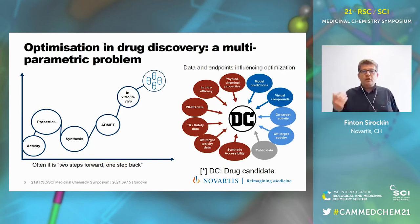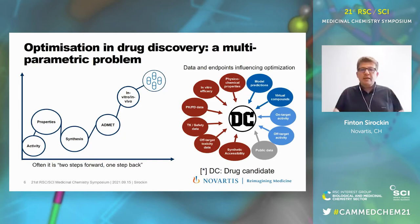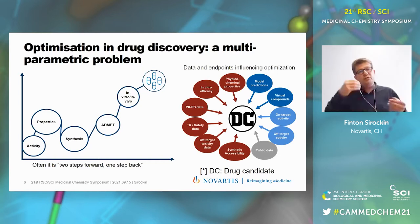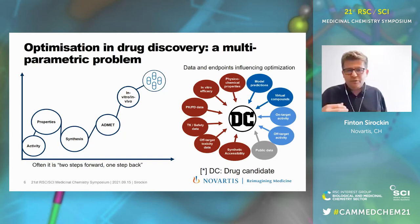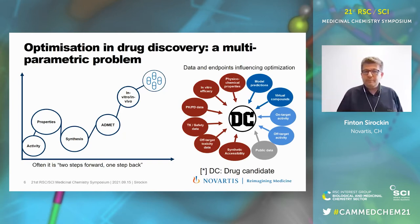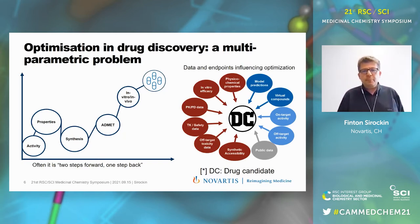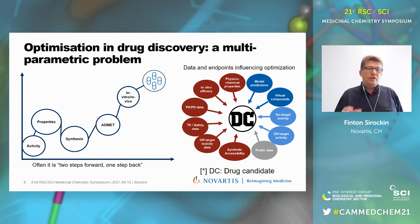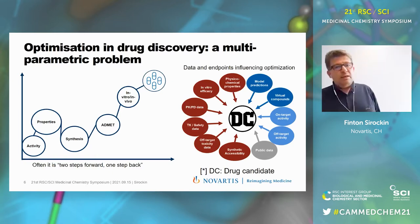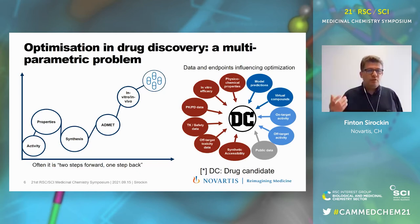A good drug candidate must bind the target efficiently, have good affinity for the target, but must also avoid anti-targets. It must have decent synthesis accessibility and good physicochemical properties to have a chance at a good ADME profile, and then hopefully a good in-vivo profile. We can usually optimize only a handful of parameters simultaneously, and often when one optimizes one parameter, another gets worse — for example, solubility versus permeability. Multi-parameter optimization methods exist and aim at finding molecules with the best overall property profile.